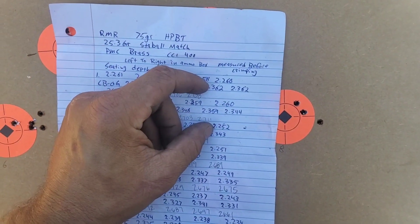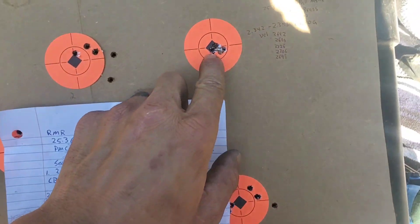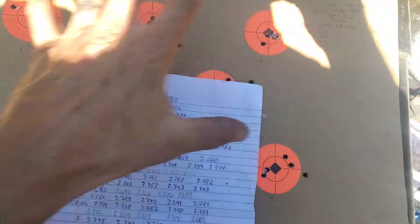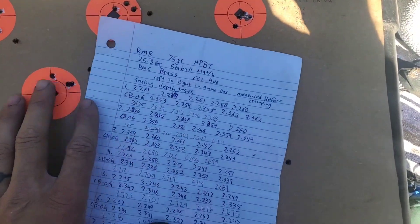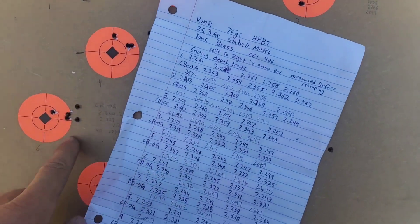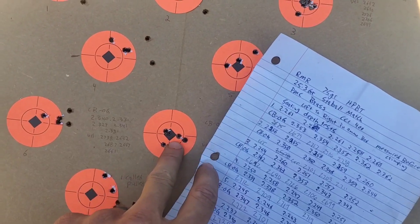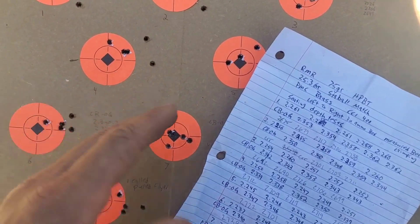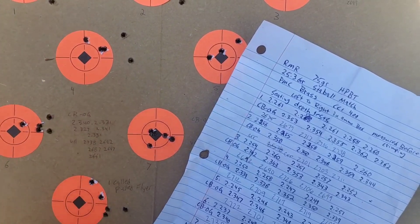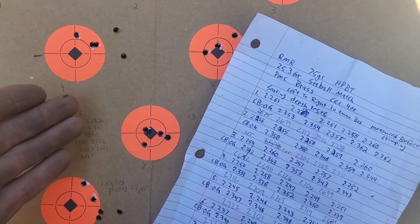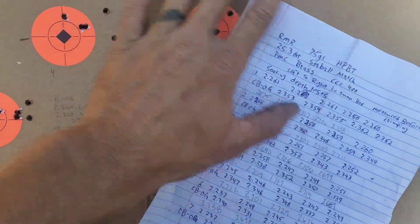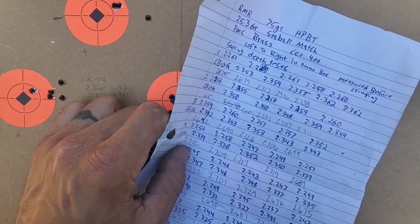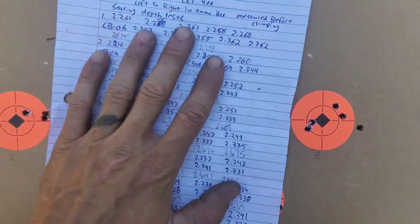Because I've got 73 grain ELDs that shoot like that every group that I shoot. So I've got a component that does that. I'm looking for something cheap that I don't need to be meticulous with. Like this and this. I'm going to load to this seating depth and I'm going to throw charges. I'm not even going to weigh these charges. I'm going to throw charges. I'm going to load up a thousand and I'm going to shoot the heck out of them. So I hope this helps you guys. Like encourages, because this is supposed to be encouraging.